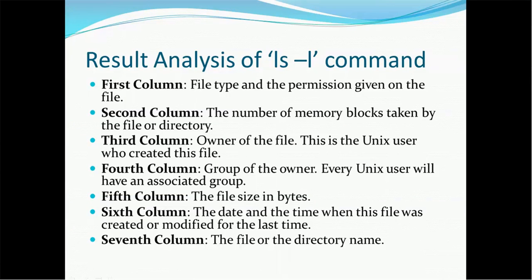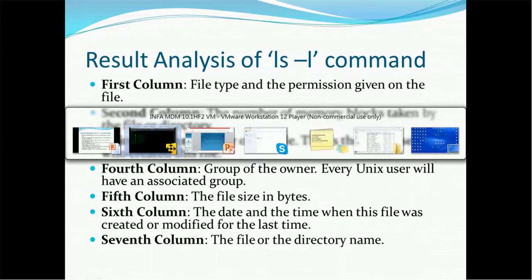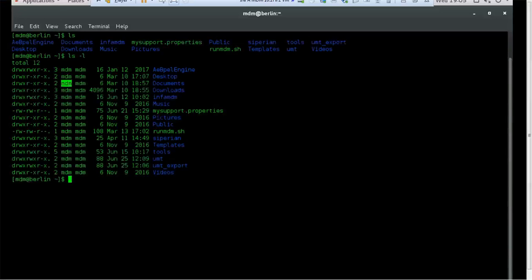Fifth column, it is the file size in bytes. How many bytes that file contains. For example, this is a 16 bytes folder directory. This is 4096 bytes directory. These are the information available in the fifth column.